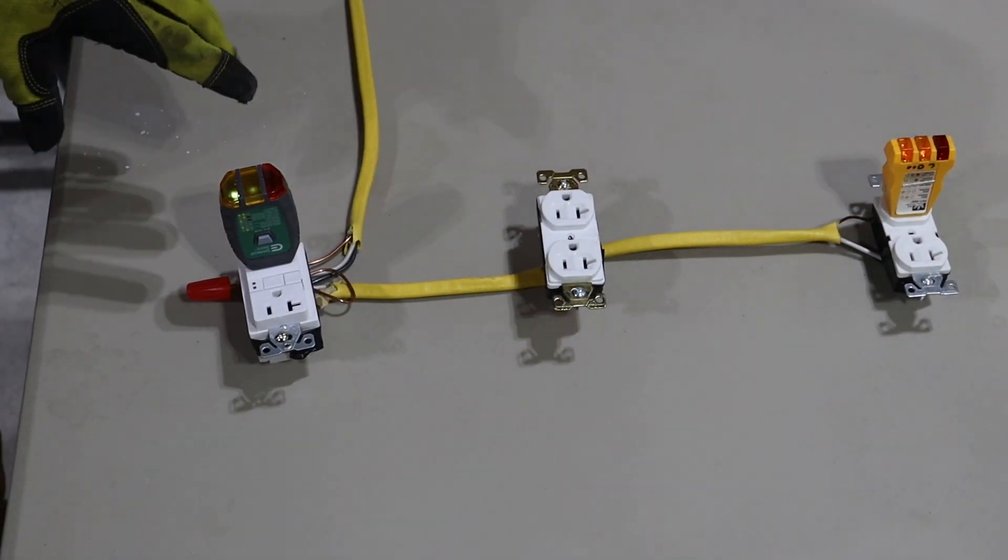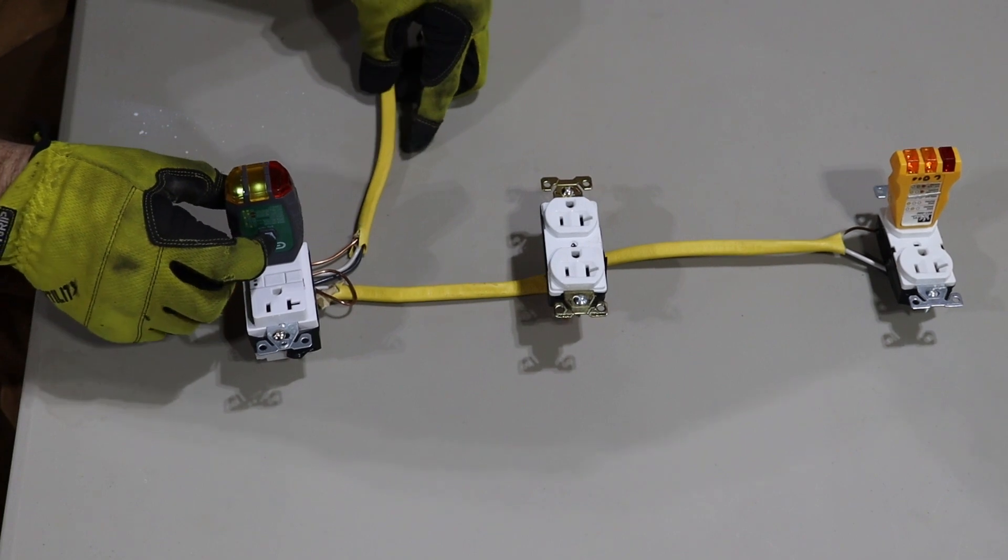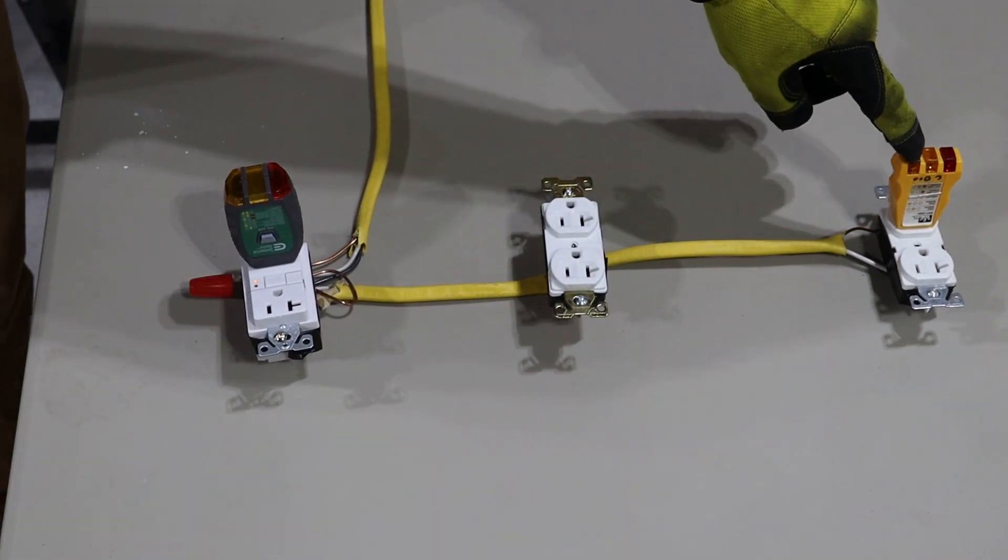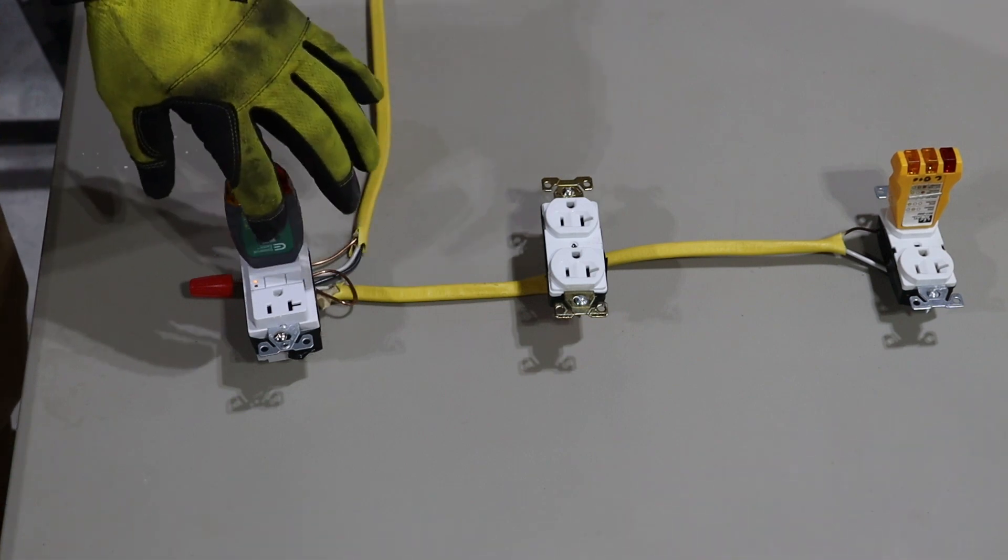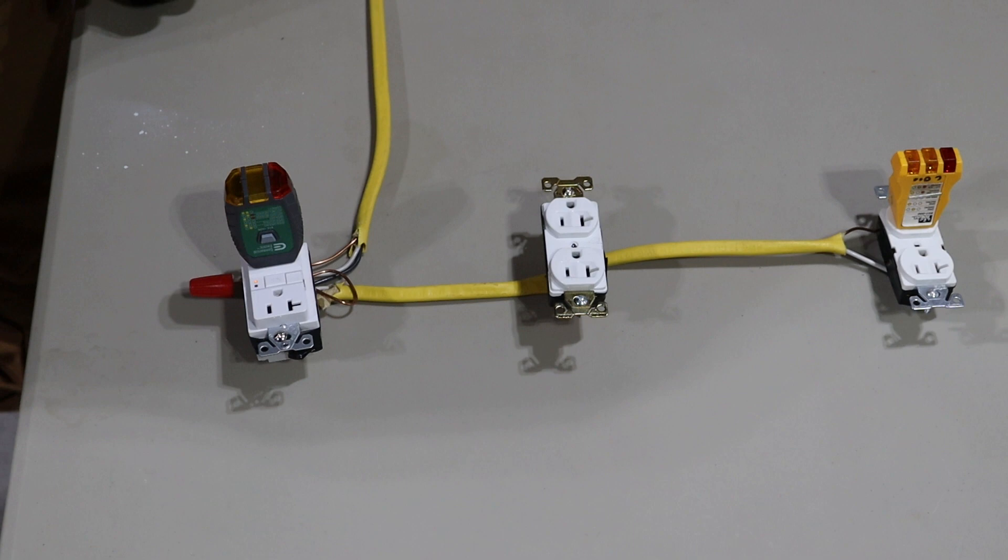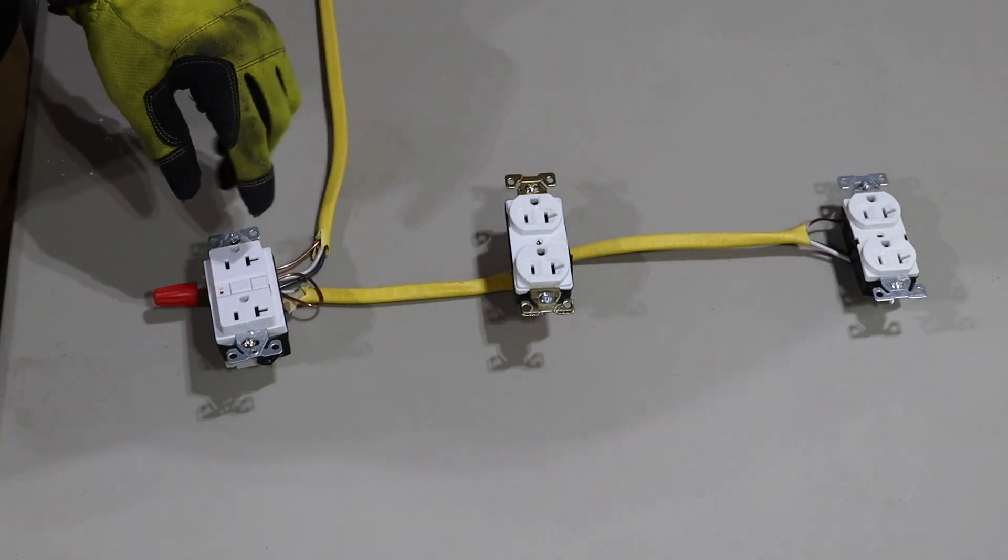Now, our lights come back on. Right now, our circuit's wired correctly based on the codes. But let's trip it. Lights go out over here. And your circuit and your ground fault circuit interrupter outlet tripped as well.